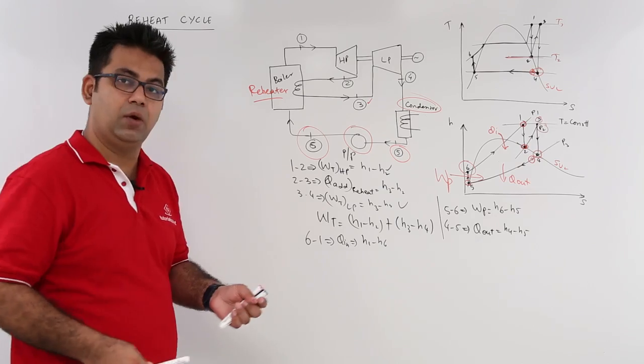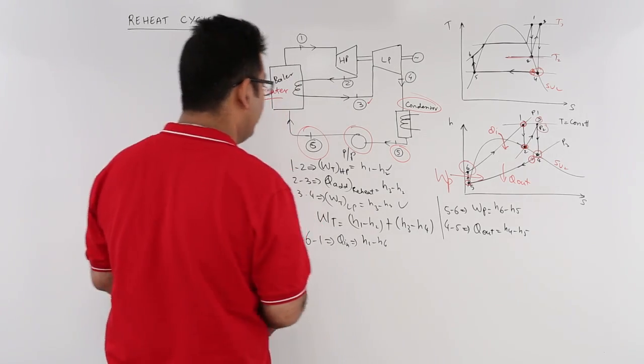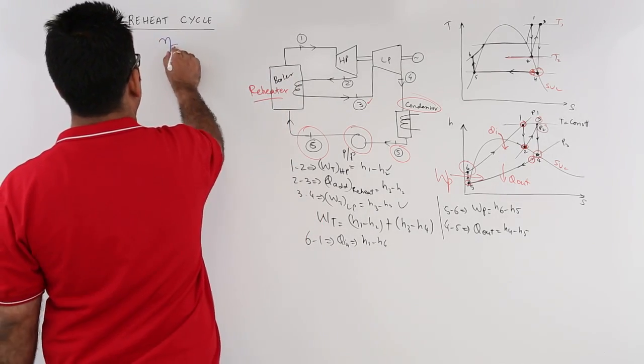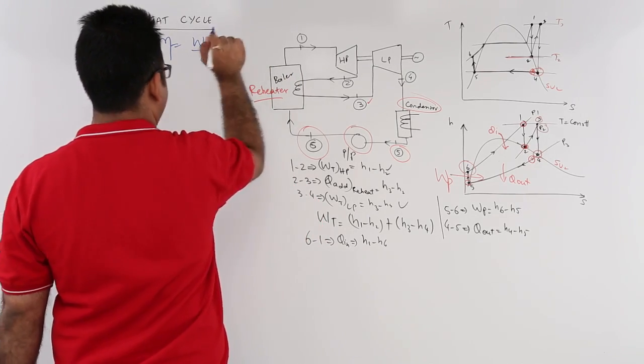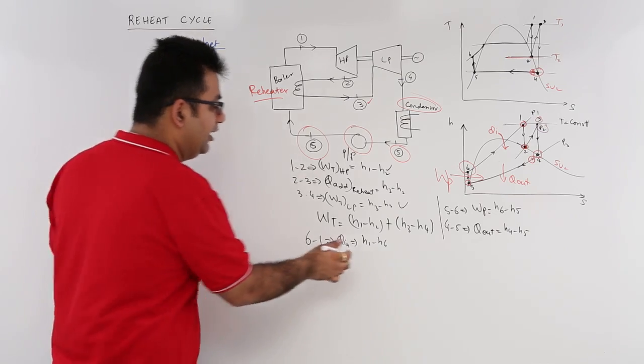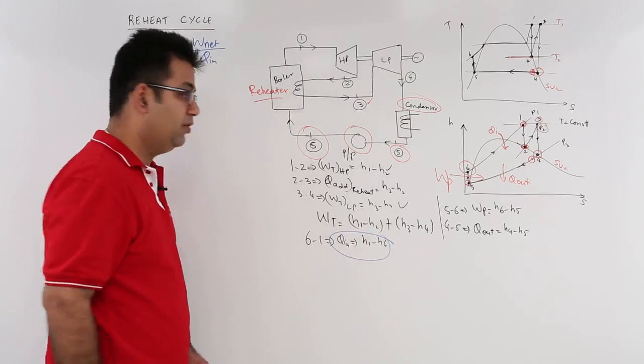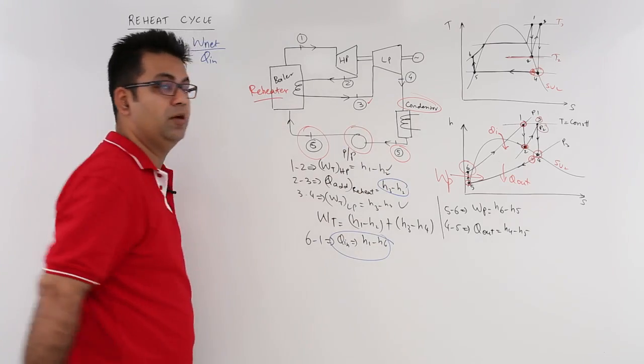If you have to find out the efficiency of it, this would be network output upon Q_in. Now you are adding some heat here also, and you are adding some heat in the reheat cycle also.